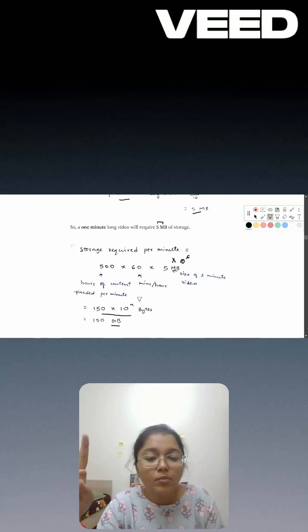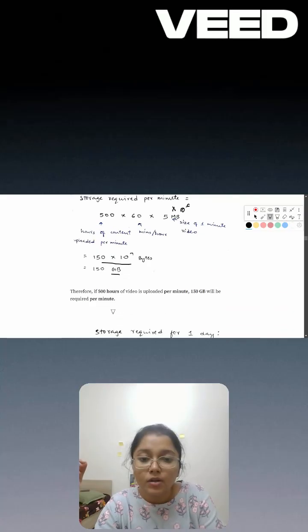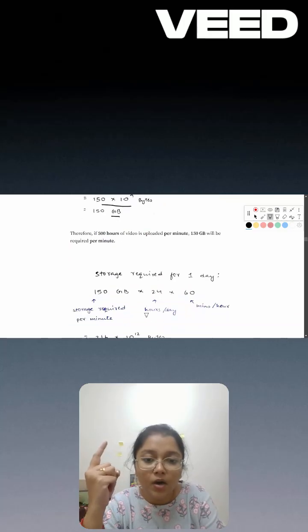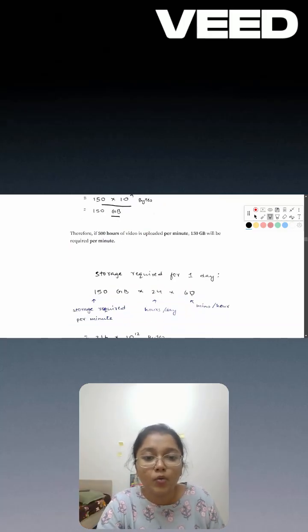So just one minute of video across entire YouTube when we are uploading is taking 150 GB. Now if 150 GB is required in one minute, in one day how much is required? We can just multiply by 24 hours in a day.